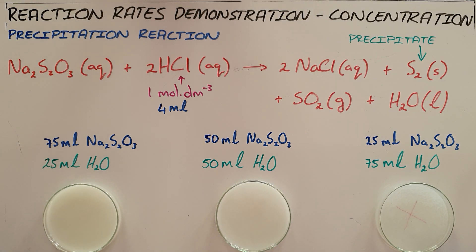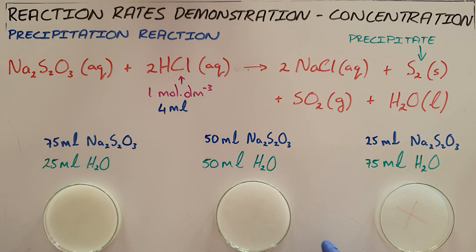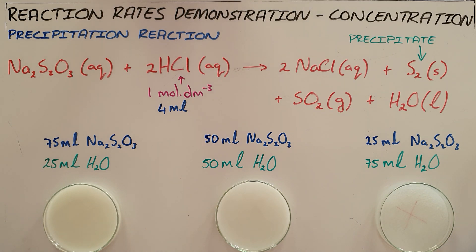This means that the only factor we have changed in this reaction is concentration. We can clearly see that a higher concentration leads to more collisions, which results in more successful collisions, which eventually results in a faster rate of reaction — and we can slowly see the precipitate forming that will eventually cover the bottom of that petri dish.